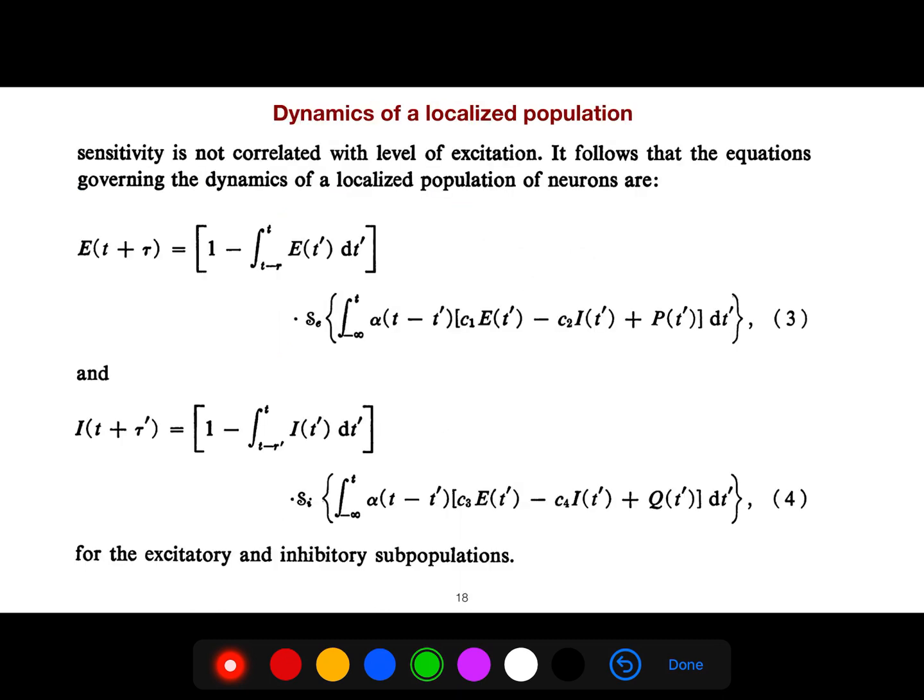These are localized dynamics of a localized population for both the excitatory and inhibitory neurons. We will see that C2, these parameters will play an important role if you want to do a phase analysis, phase space. In the phase space, you will see the dynamics of a dynamical system.